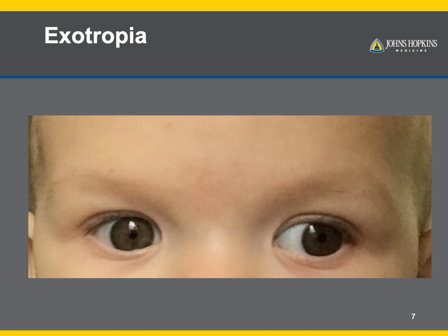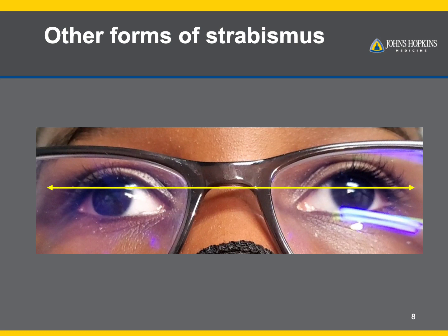Here is an example of exotropia. Notice that the light reflection is asymmetric here, indicating that the eye is drifting outwards. There are many other forms of strabismus that also have additional vertical and torsional or twisting components that require treatment. These are frequently associated with a horizontal component as well.